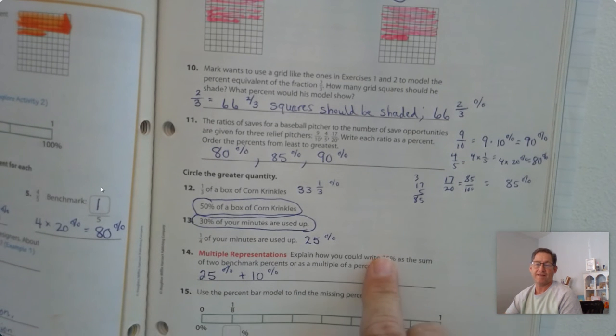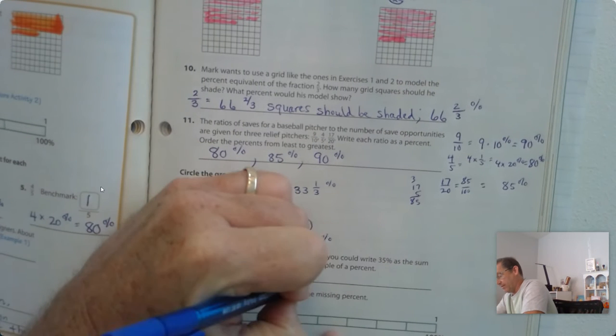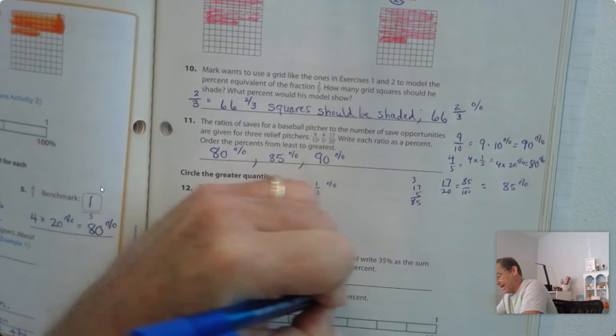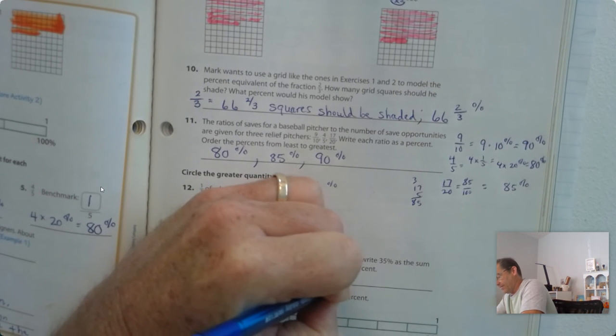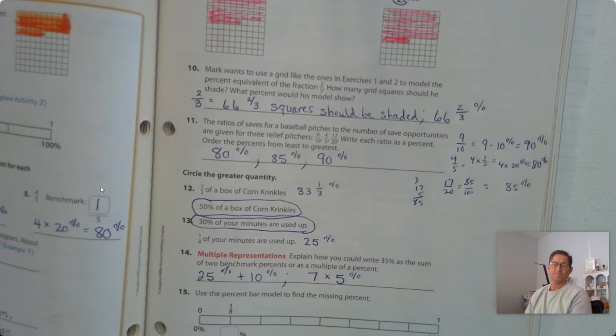Or as a multiple of a percent. Well, what is a factor of 35? 5, right? So as a multiple of a percent, it would be 7 times 5%.